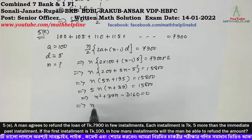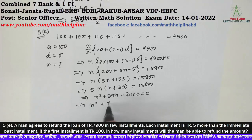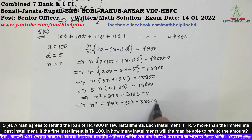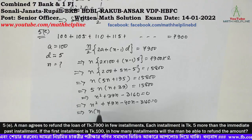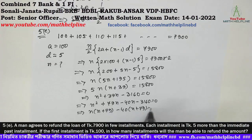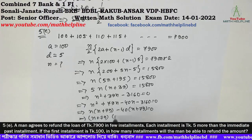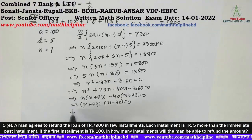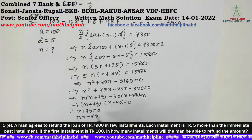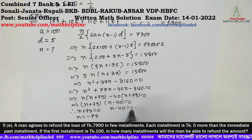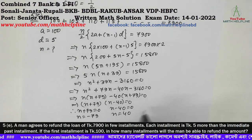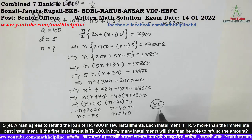Factoring the quadratic: n squared plus 79n minus 40n minus 3160 equals 0. Taking n common: n times (n plus 79) minus 40 times (n plus 79) equals 0. So (n plus 79)(n minus 40) equals 0. This gives n equals minus 79, which is not acceptable since the number of installments must be positive. Therefore n equals 40. The total number of installments is 40.